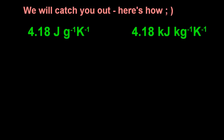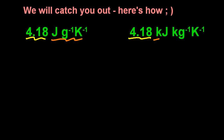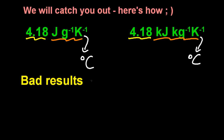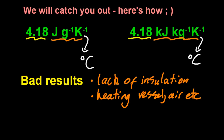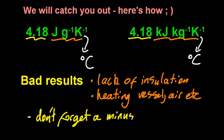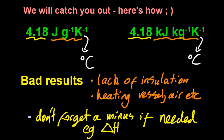There are several ways we might try to catch you out. The value 4.18 and 4.18 are the same, but keep an eye on the units: if you're in joules, make sure you're in grams; if you're in kilojoules, make sure you're in kilograms. Don't get confused with those units. We could give you degrees C — but that's the same thing as kelvin, because it's the difference in temperature, so it's going to be the same number. Your results might be bad — well, that's a lack of insulation: you were heating up the container, heating up the air. And the minus sign — don't forget a minus if you need it. If we're asking for delta H of combustion, that's exothermic, so it's going to need a negative sign, like negative 10 joules or something.